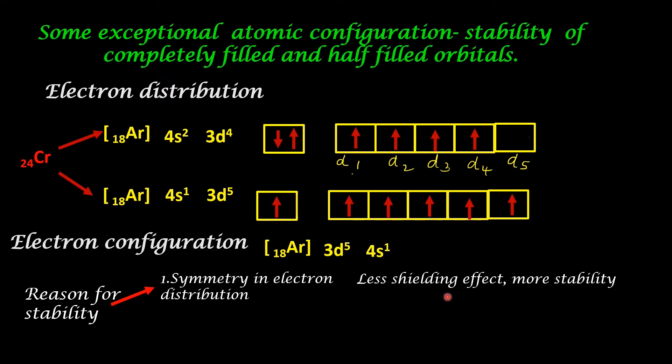Okay. So all the electrons are attracted by the nucleus and it gives more stability. So less shielding effect means more stability. Half filled and completely filled orbitals have symmetry. Therefore, it offers less shielding effect and more stability.